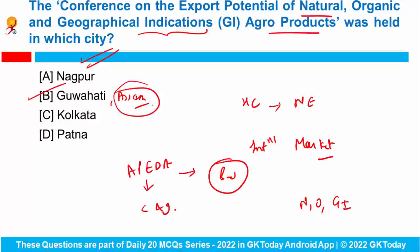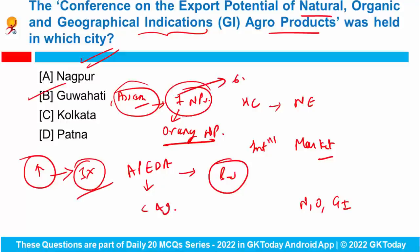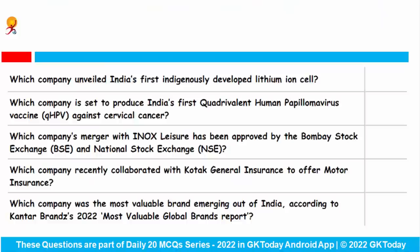Talking about Assam, it has a total of seven national parks, one of which is Orang. Orang National Park was in the news because the state government of Assam has decided to increase the size of this national park up to three times its current size. You should also be able to name the other six national parks of Assam.